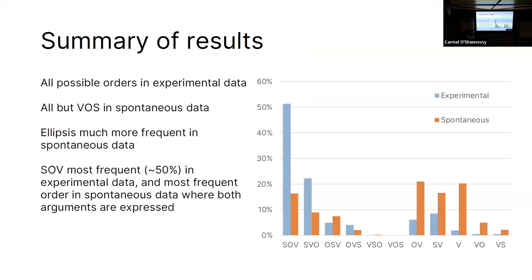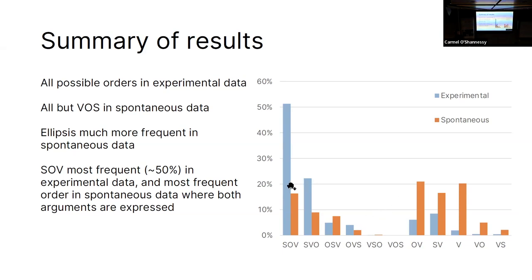In the experimental data we found all possible orders, and in the spontaneous data we found all possible orders except object-subject. As you can see with the orange bars, ellipsis was much more frequent in the spontaneous data, which is not surprising. SOV was the most frequent order in the experimental data, at about half of the responses. In the spontaneous data, OV, SV, and V orders were most frequent, but where both arguments were expressed, SOV was the most frequent. SOV in both types of data was roughly twice as frequent as SVO.